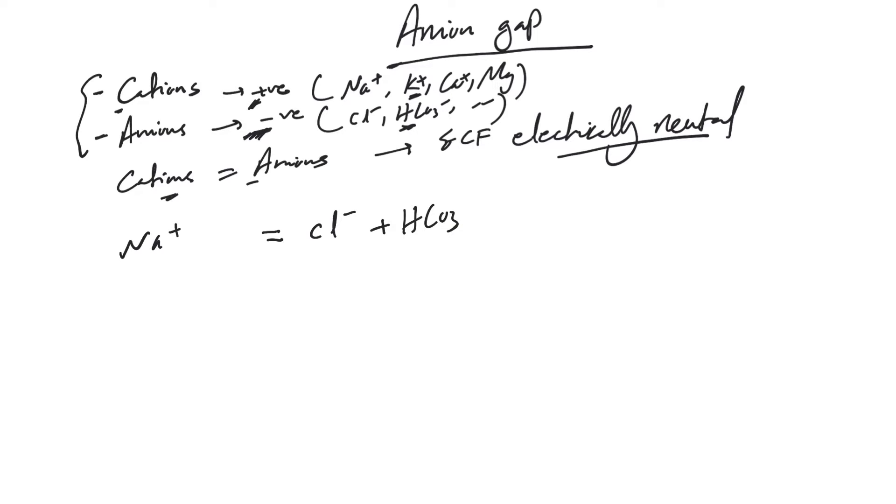For the sake of this lecture, we're going to call them unmeasured cations and unmeasured anions. Unmeasured cations means potassium, magnesium, calcium, and unmeasured anions we're talking about sulfuric acid, albumin, etc. These positive charges here equal at any moment two negative charges here. This equation can be rearranged to unmeasured anions minus unmeasured cations equal to sodium minus the sum of bicarb and chloride.